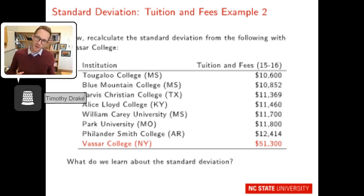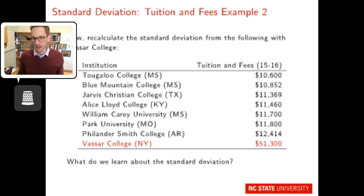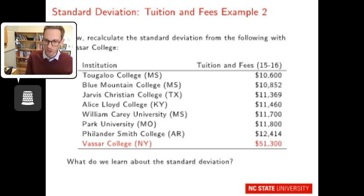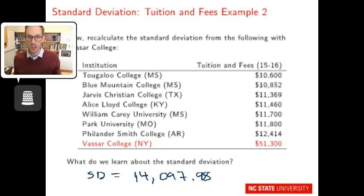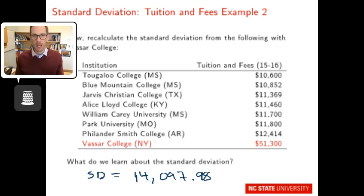Now redo the same process adding Vassar College. If you recalculate with Vassar College, the standard deviation equals $14,097.98. Our previous standard deviation without Vassar was $605 — now with Vassar it's $14,097. Very similar to the mean, because the average is in the calculation: standard deviation is very sensitive to extreme values and outliers.